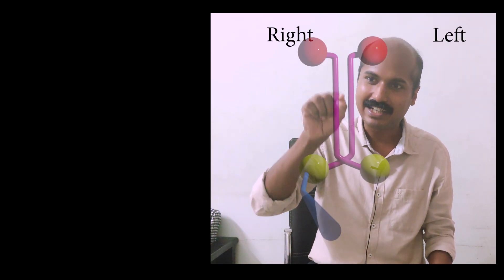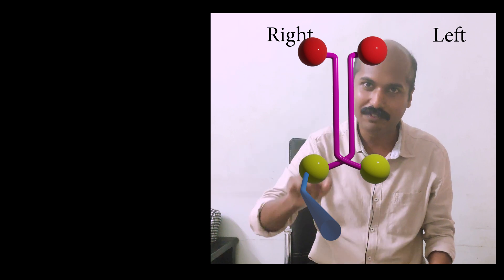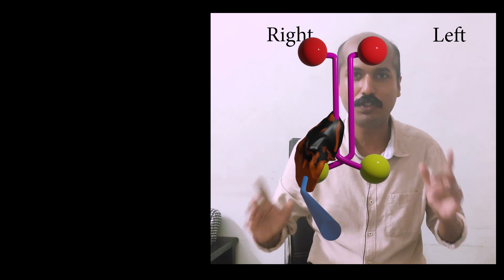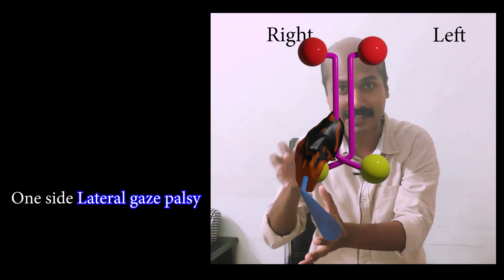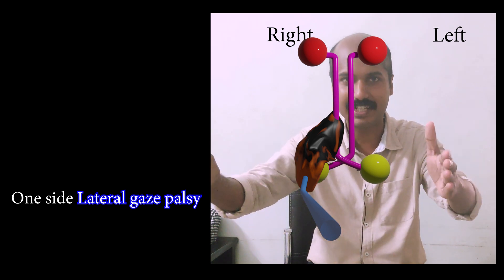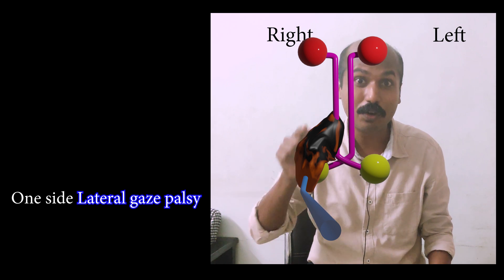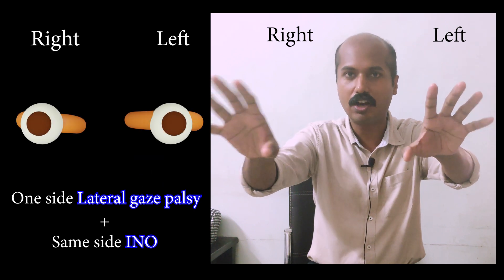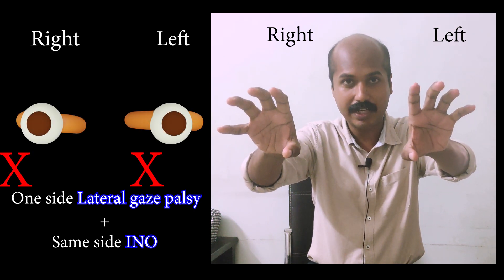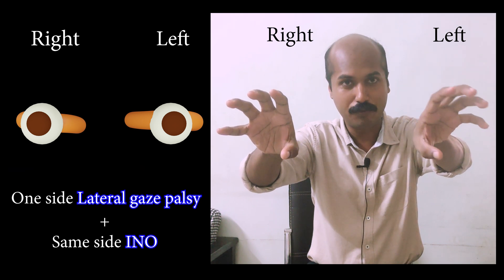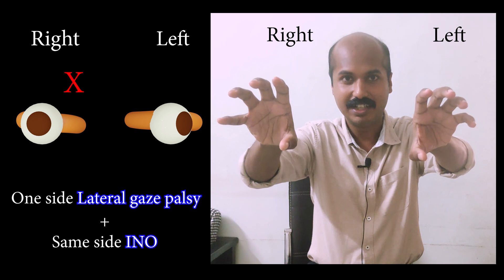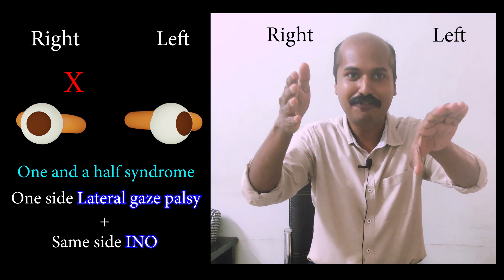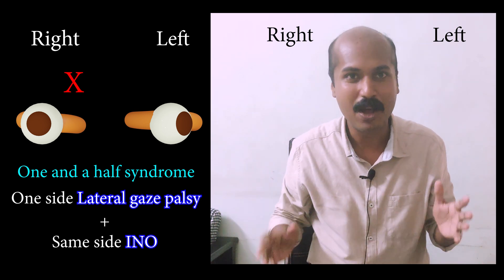Now consider a more extensive lesion where both the right MLF and the right abducens nerve nucleus are affected. The abducens nucleus lesion causes a right lateral gaze palsy, and the right MLF lesion adds the component of a right INO. The person has complete loss of rightward gaze, and on attempted leftward gaze, the left eyeball abducts but the right eyeball does not adduct. This is called one-and-a-half syndrome — one complete gaze is affected and half of the leftward gaze is affected.